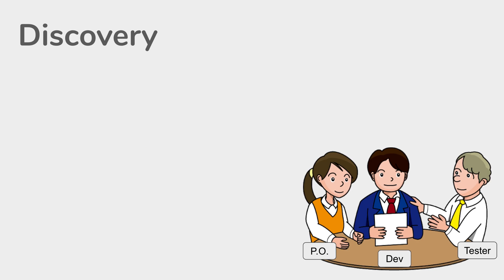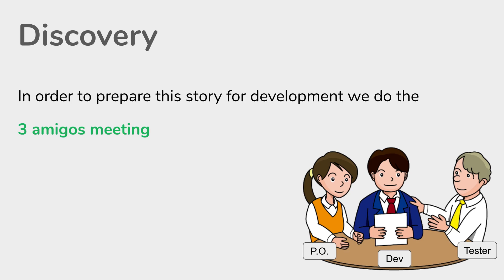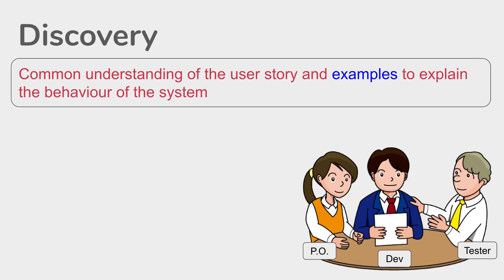Before that, let us take a step back and understand that in the earlier session, we discussed about discovery, or the discovery phase. The process of BDD in any organization starts with the discovery phase, where we have the three amigos meeting — in simple words, a meeting of the representatives of three teams: the business team, the development team, and the testing team. In the discovery phase, the team develops a common understanding of the user story with examples.